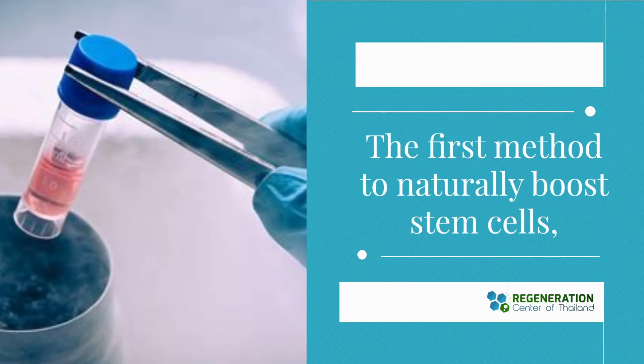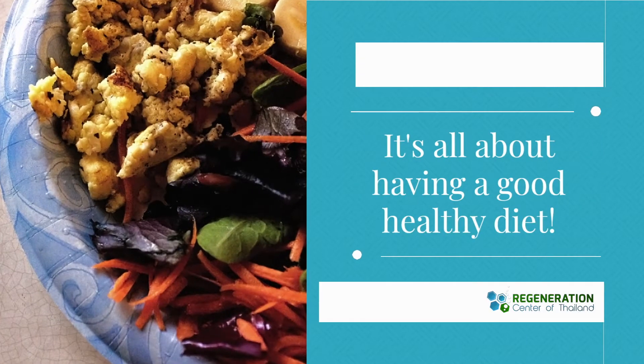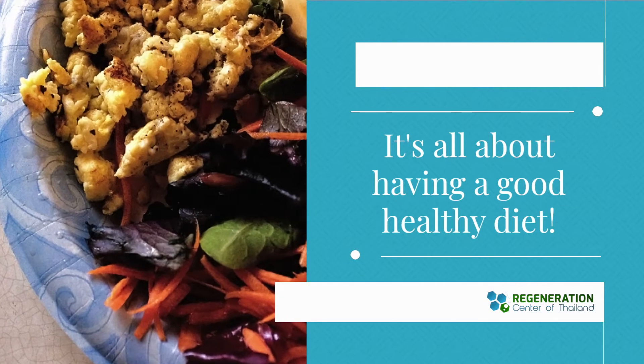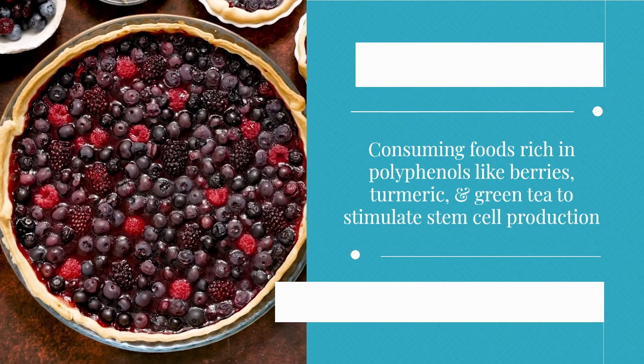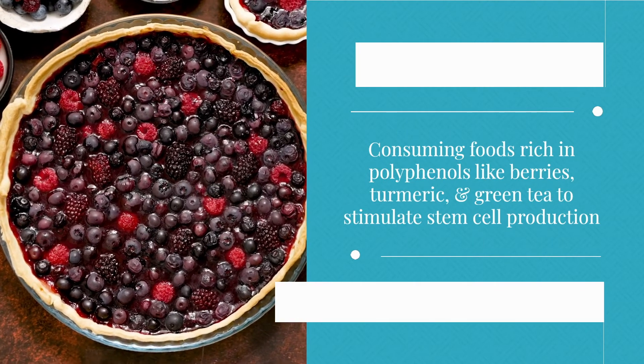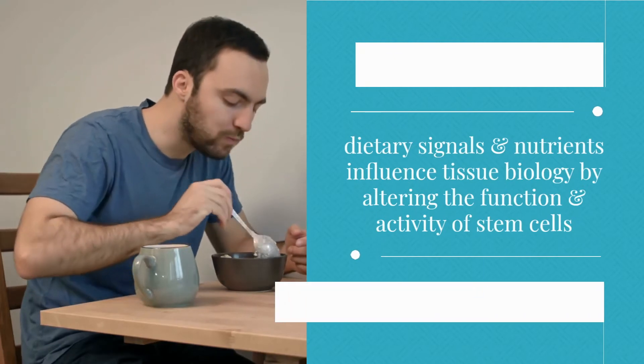The first method to naturally boost stem cells is all about having a good healthy diet. Consuming foods rich in polyphenols like berries, turmeric, and green tea can stimulate stem cell production. Dietary signals and nutrients influence tissue biology by altering the function and activity of stem cells.